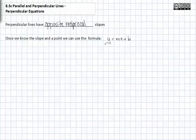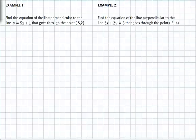Let's do some examples. Example one: find the equation of the line perpendicular to the line y equals 5x plus 1 that goes through the point negative 5, 2.